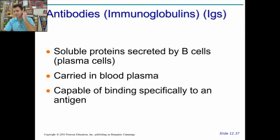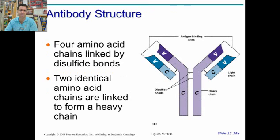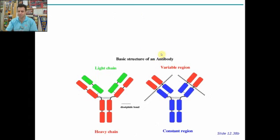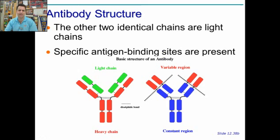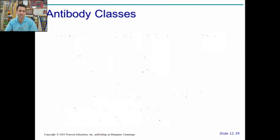Antibodies are also called immunoglobulins — they're soluble proteins secreted by B cells, carried through the blood plasma, and they bind to a specific antigen. The structure of an antibody has constant and variable regions, and the only part that changes is the variable region, which is what binds to the antigen.